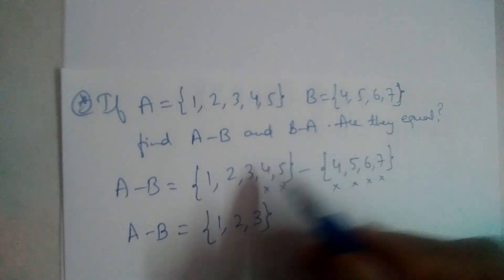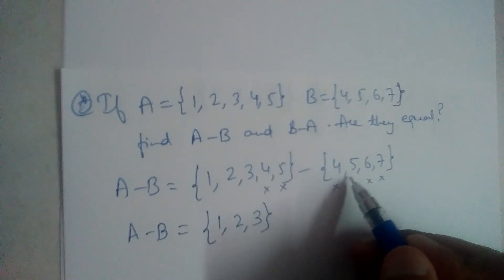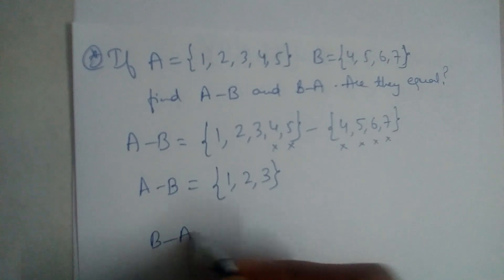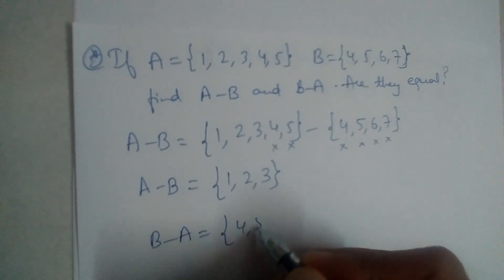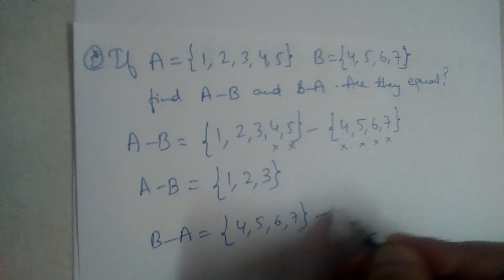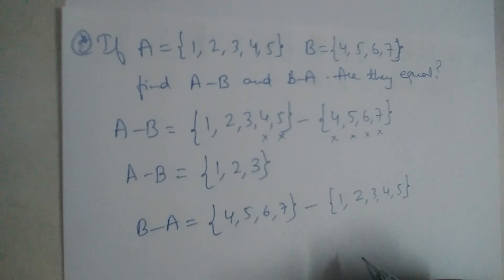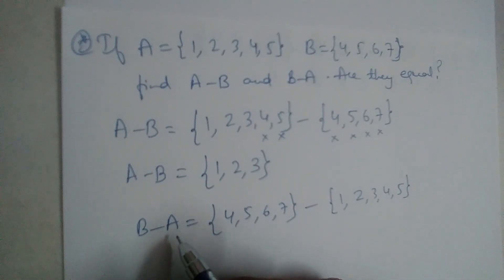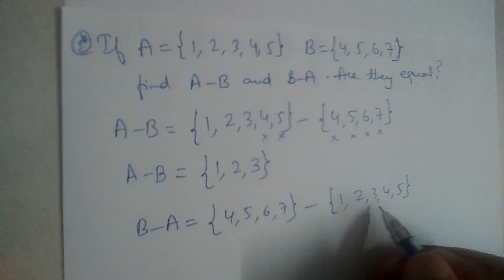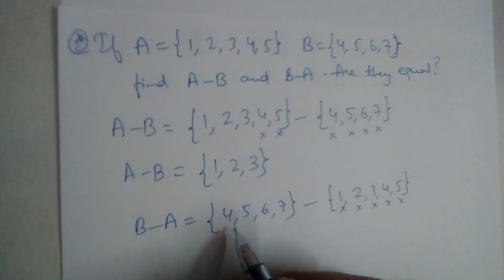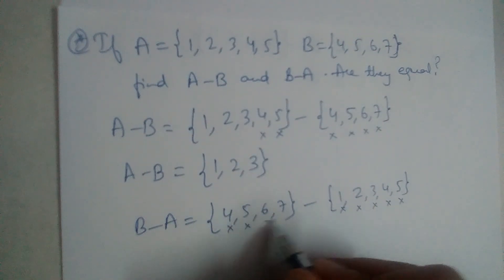Now let us write B minus A: {4, 5, 6, 7} minus {1, 2, 3, 4, 5}. B minus A means the elements present in A should not be written — so do not write 1, 2, 3, 4, and 5. Therefore, B minus A is equal to {6, 7}.